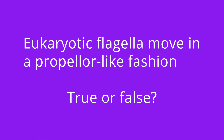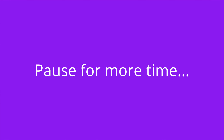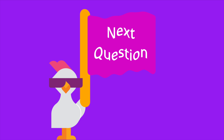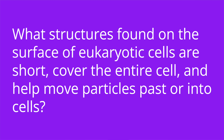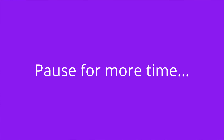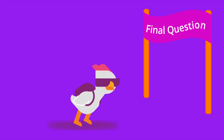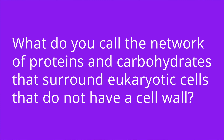Number three: Eukaryotic flagella move in a propeller-like fashion. True or false? The answer is false. They move in a whip-like fashion, whereas prokaryotic flagella do move in a propeller-like fashion. Number four: What structures found on the surface of eukaryotic cells are short, cover the entire cell, and help move particles past or into cells? The answer is cilia. Number five: What do you call the network of proteins and carbohydrates that surround eukaryotic cells that do not have a cell wall? The answer is the extracellular matrix.